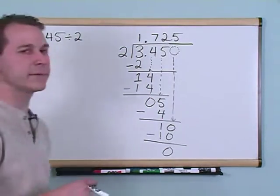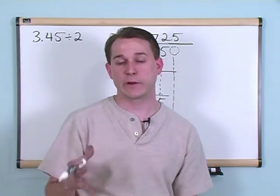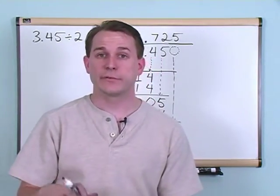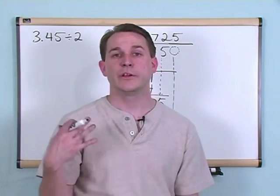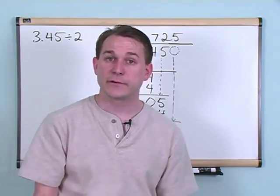Now this is quite a bit different than what we used to do when we were dividing regular numbers. With regular numbers, when you would divide down and get to a point where you couldn't divide anymore, you have what we call a remainder.